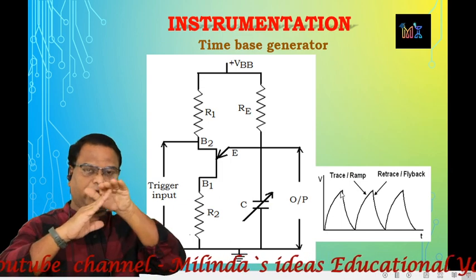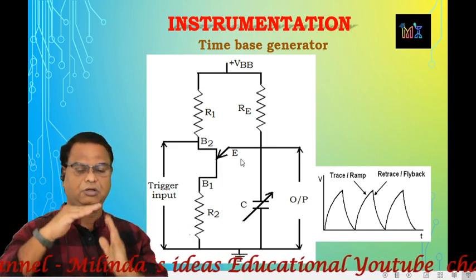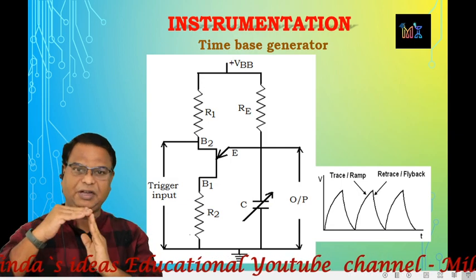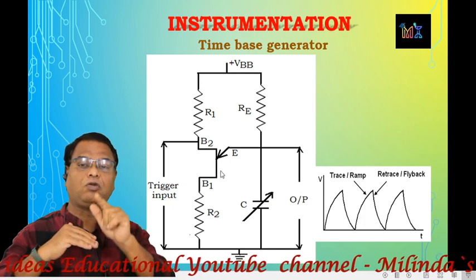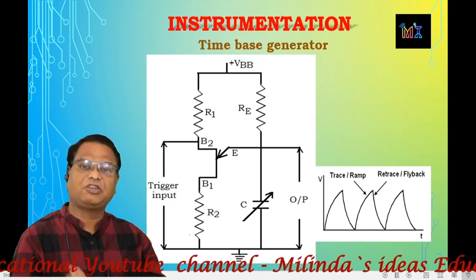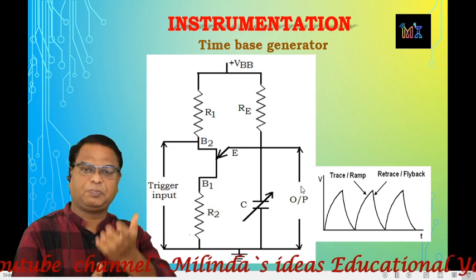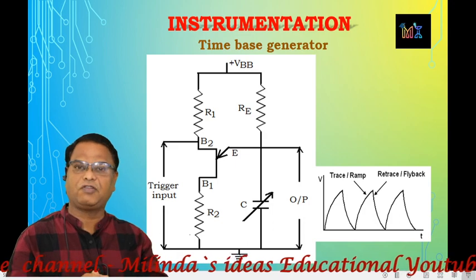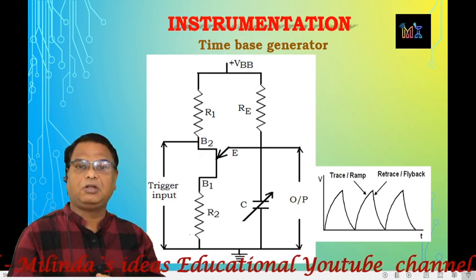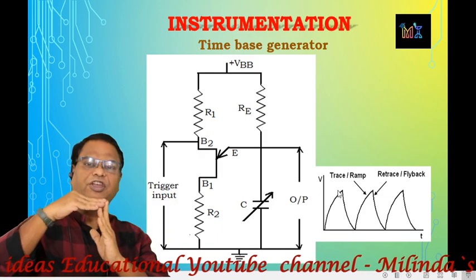Now, when the capacitor voltage rises, and this potential overcomes the intrinsic standoff voltage of the UJT, the UJT turns ON. While the applied voltage does not overcome the intrinsic standoff potential, the UJT remains in OFF condition. The capacitor continues to charge until the voltage crosses the intrinsic standoff voltage.